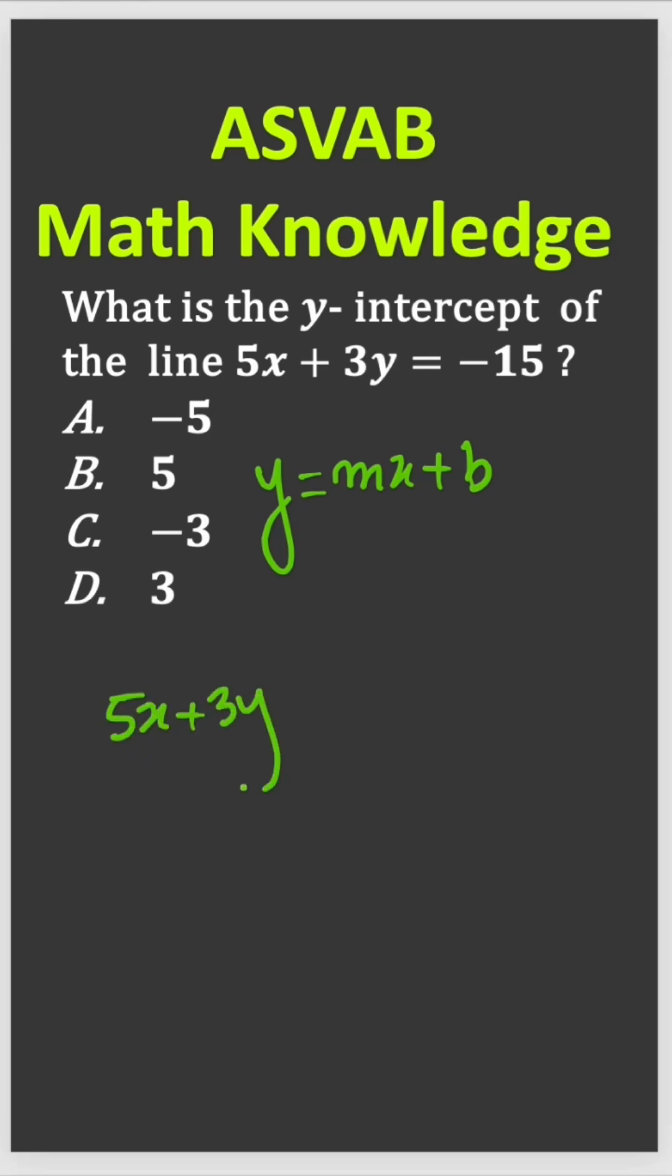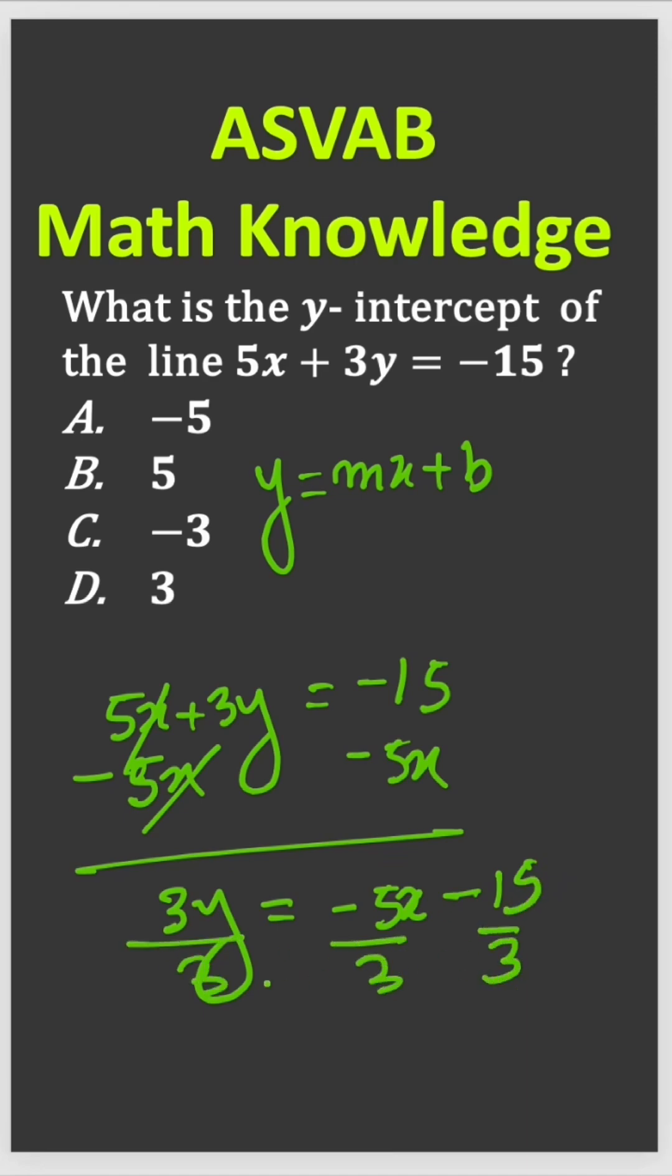5x plus 3y equal to negative 15. So again, subtract both sides by 5x. So 5x here, 5x there. So this is cancelled out.